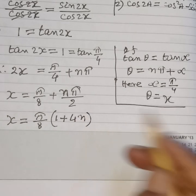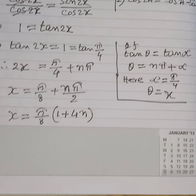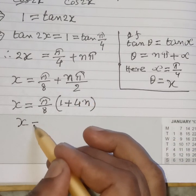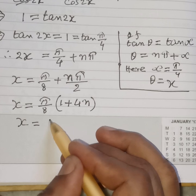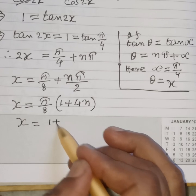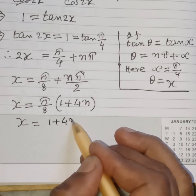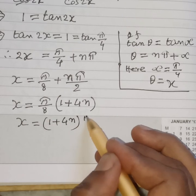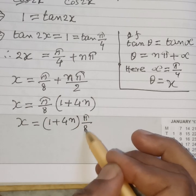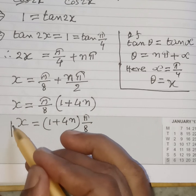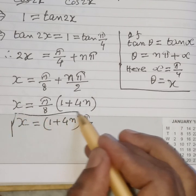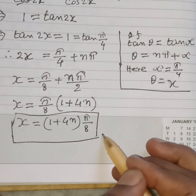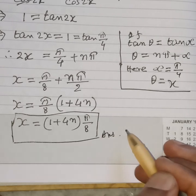So x equals (1 plus 4n) times π/8, and this is the final answer to this problem.